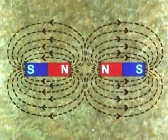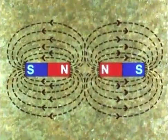On the other hand, when like poles are together, the lines of force turn away from each other, and almost seem to be pushing each other apart. There is a region without lines of force between the two magnets.